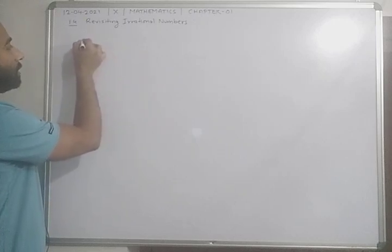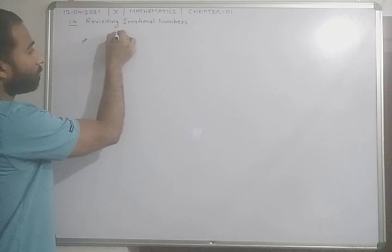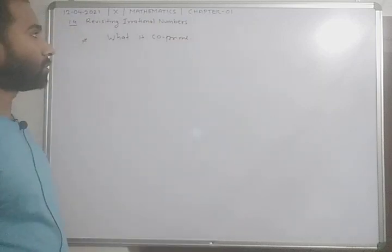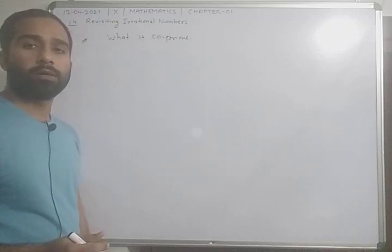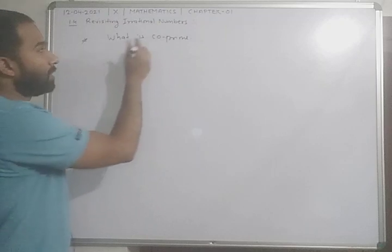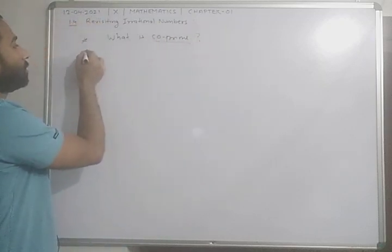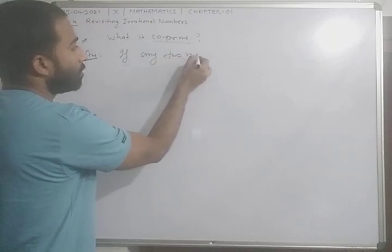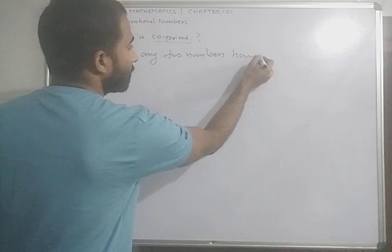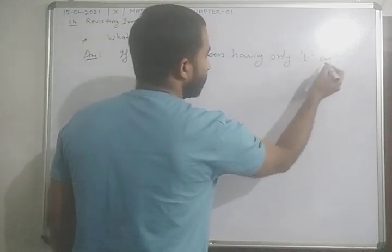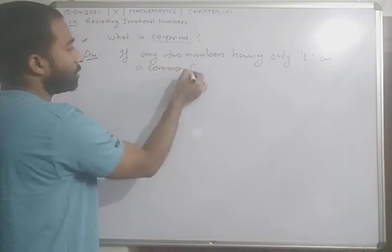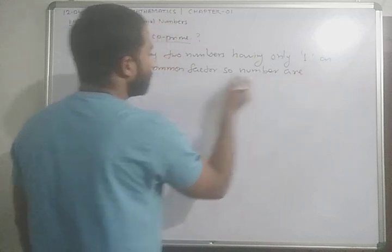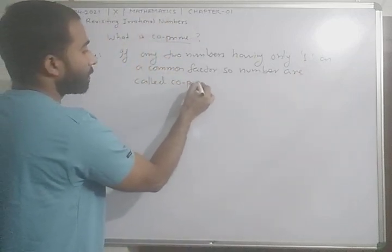The first point we will discuss is: what is co-prime? I know that many students from your side know about co-prime, but I will discuss the meaning of this word. The answer is: if any two numbers have only one as a common factor, those numbers are called co-prime numbers.